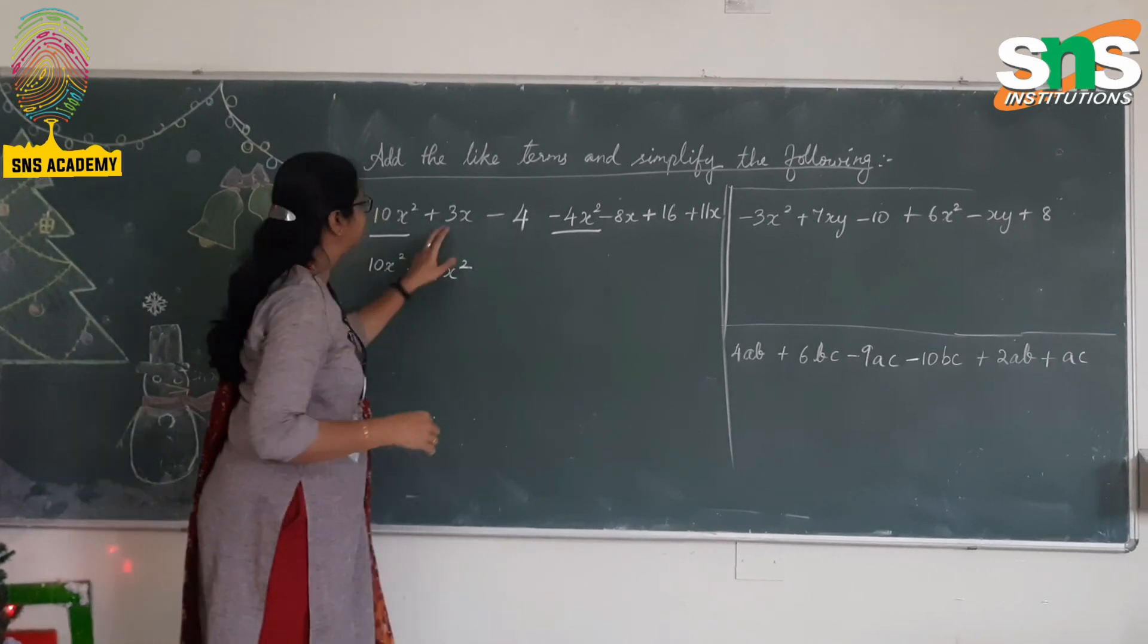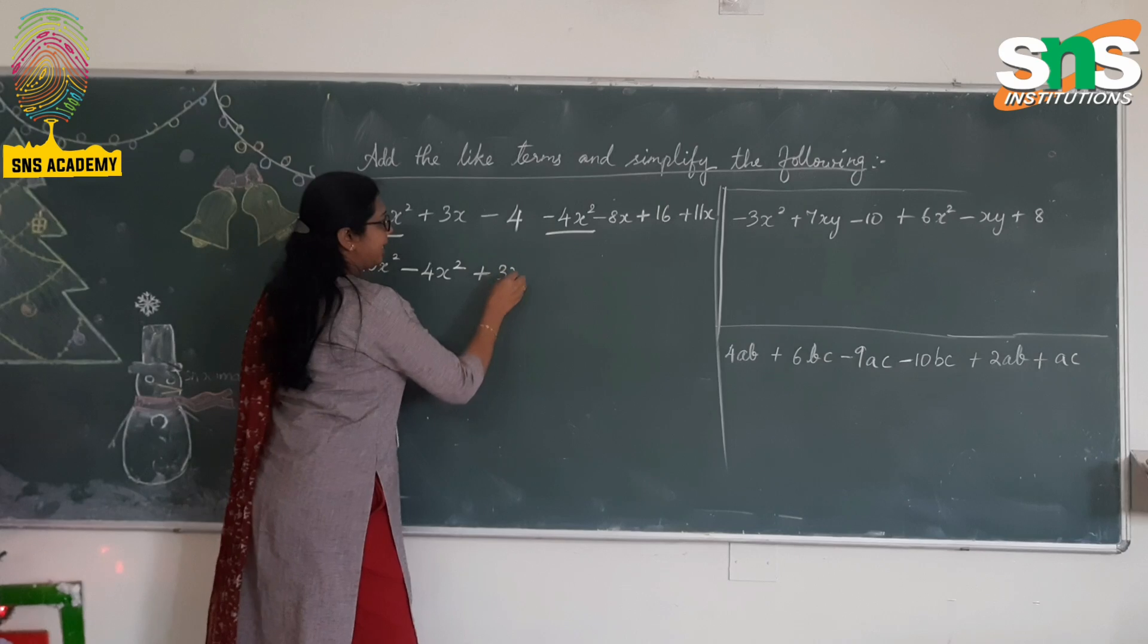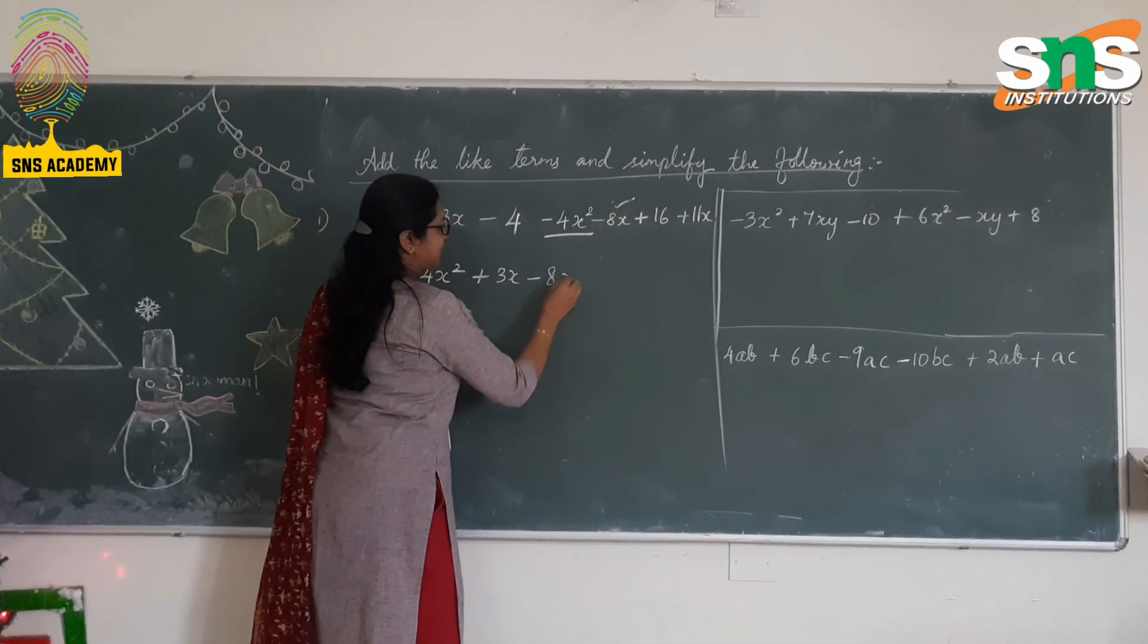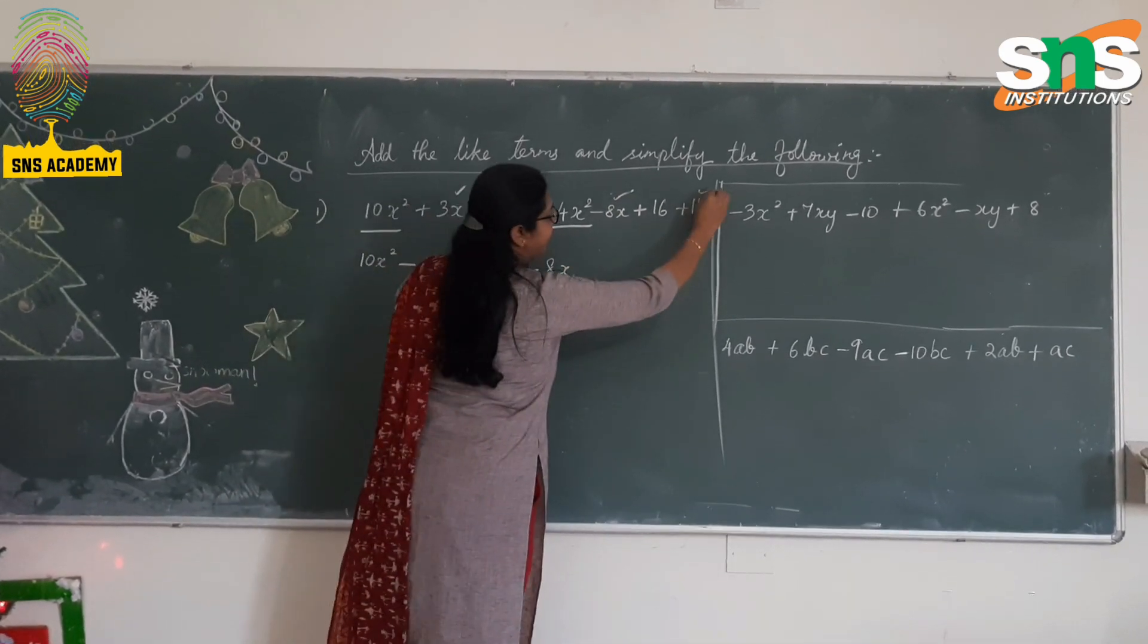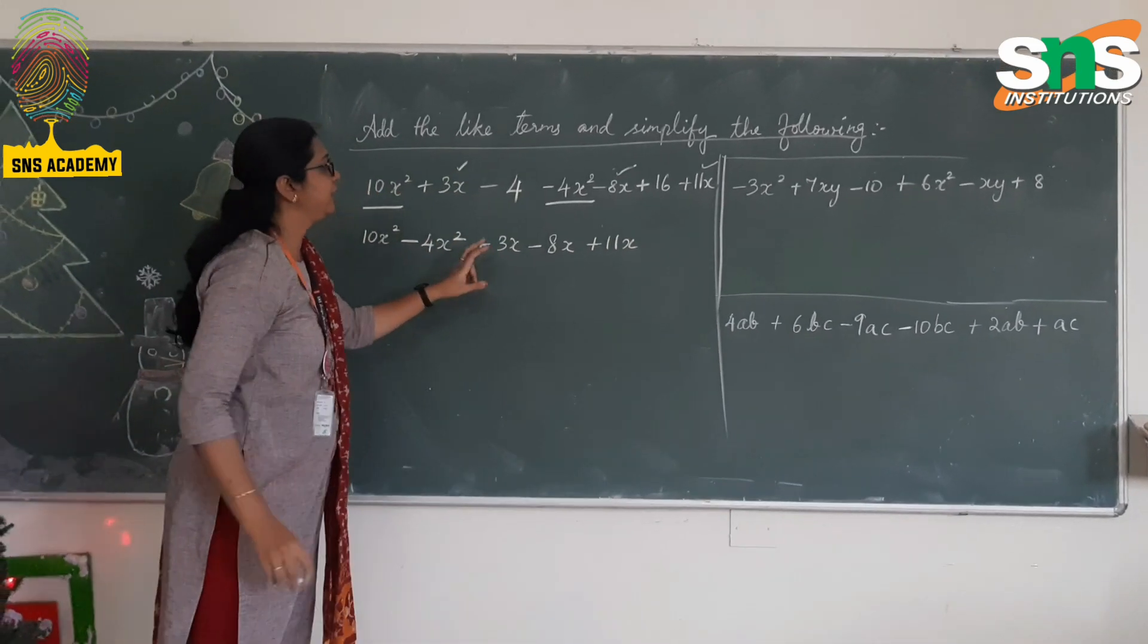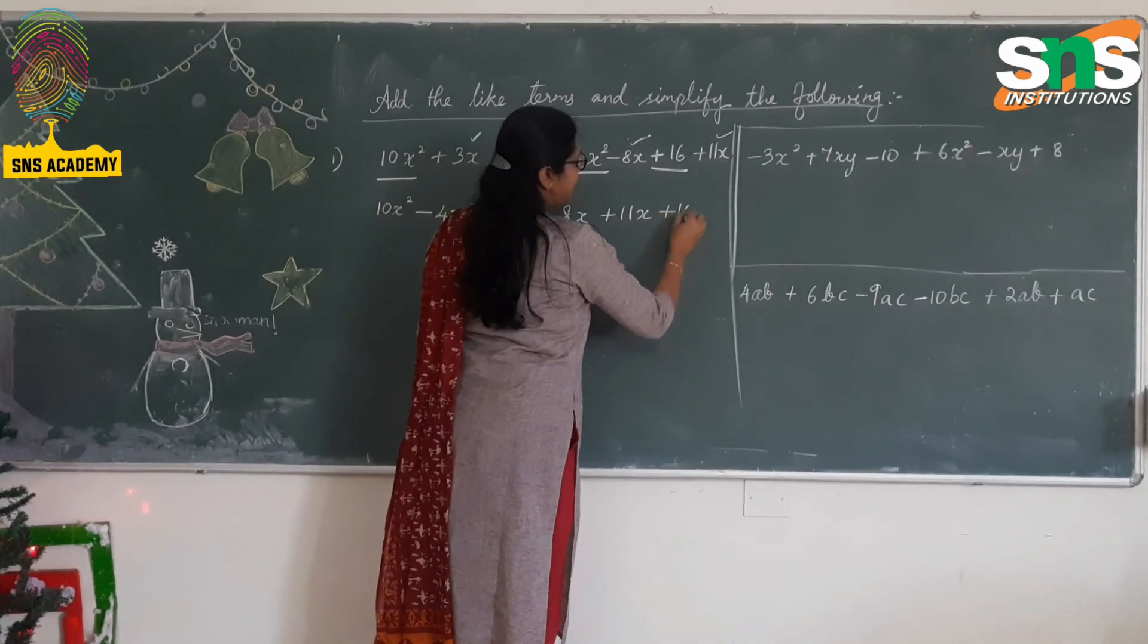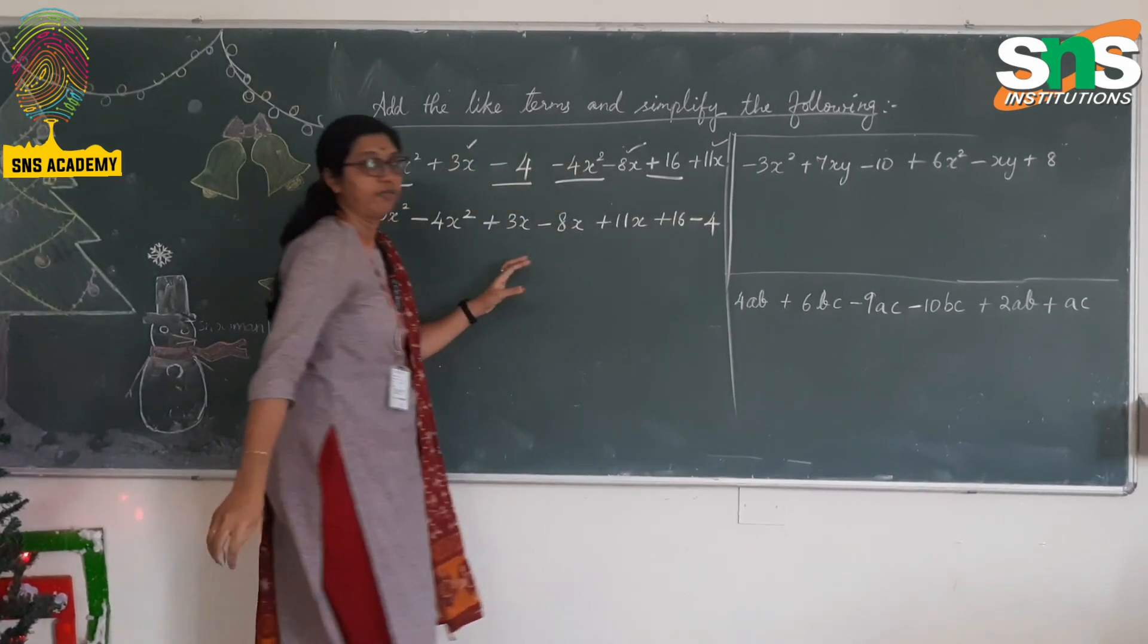Then comes the term x. The term with x is 3x - 8x and one more thing is positive 11x. Is it clear? With that we have two more constants negative 4 and positive 6, so +6 - 4.